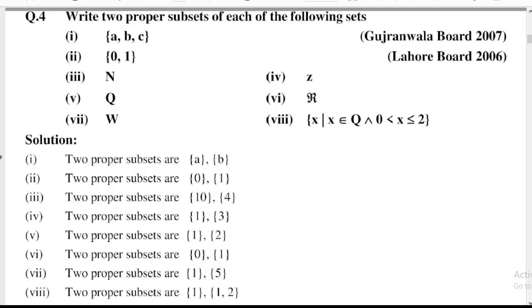Part number 3: N, where N means natural numbers. Natural numbers start 0, 1, 2, etc. Two proper subsets are {10}, {4}.